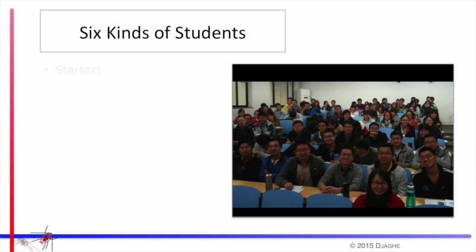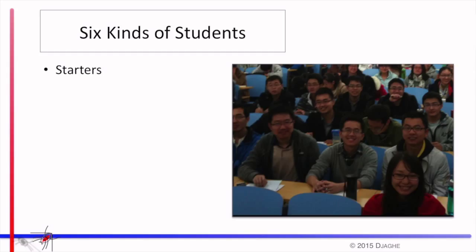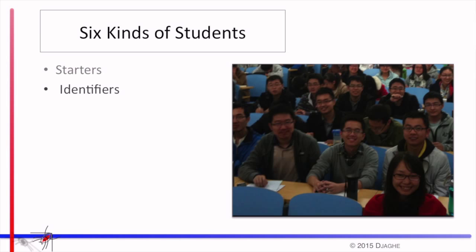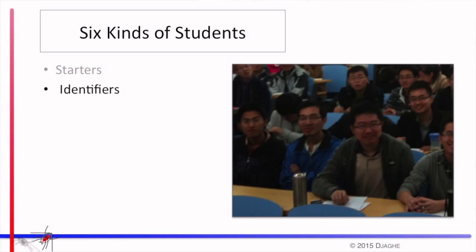This is a process that allows you to build the feeling that the class is a team working against the material, with you standing on the side helping them. As you work, you discover that there are different skills in the students, and one of your jobs as director is to make the best use of those different skills. In general, I've identified six kinds of students. The first are the starters — they are confident in themselves and more than willing to start work on a problem or start explaining an idea to the rest of the class. The second are the identifiers — people who look at a problem or task and recognize what they have to do to solve it. They can't always solve it, but they know what must be demonstrated or what algorithm they need to apply.